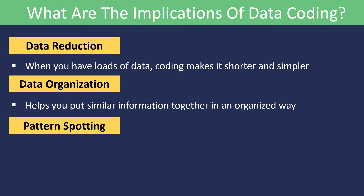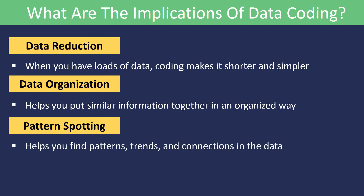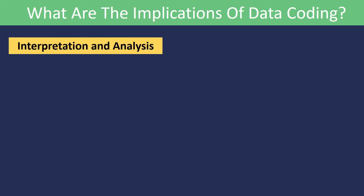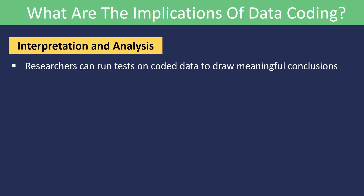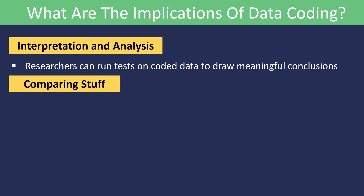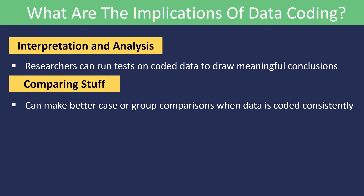Number three, pattern spotting: coding helps you find patterns, trends, and connections in the data that might not be obvious when you are looking at the raw data. Interpretation and analysis: coded data forms the foundation for crunching numbers and testing theories. Researchers can run tests on coded data to draw meaningful conclusions. Researchers can also make better case or group comparisons when data is coded consistently, helping come up with insights and theories.